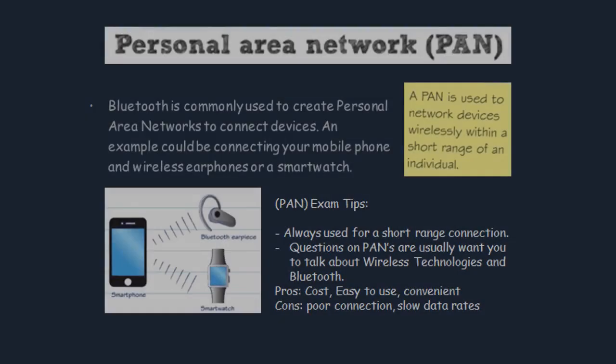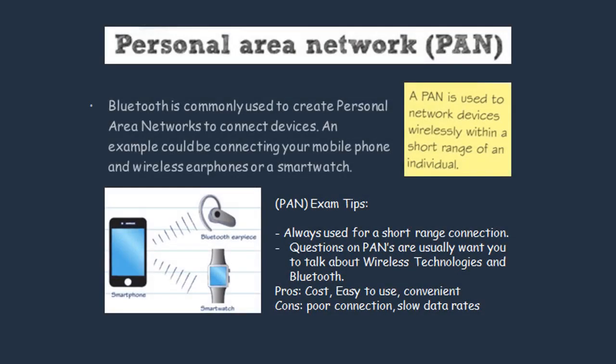The first network type we're going to talk about is a Personal Area Network. Personal area networks are most commonly used with Bluetooth, so an example could be your mobile phone and a pair of wireless earphones, or even a smartwatch. You can see that in this type of network the devices connected need to be close together.